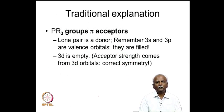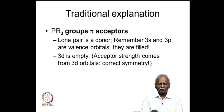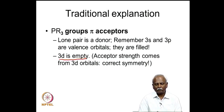Let us look at the traditional explanation available until the mid-1980s. People normally gave this explanation, which illustrates an important scientific principle: one achieves a better explanation at the end of a discussion. The original explanation was that PR3 groups are pi acceptors, and this pi-accepting property arose from the 3d orbital, which is empty — because phosphorous has its valence electrons in the 3s and 3p.